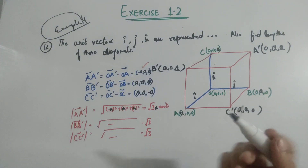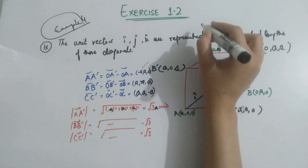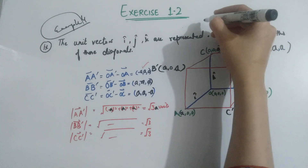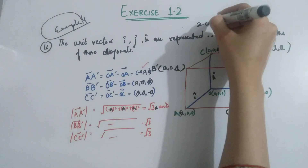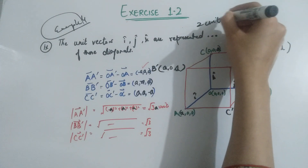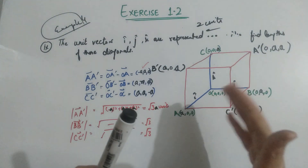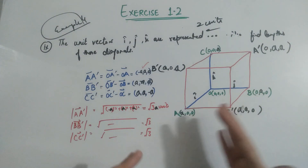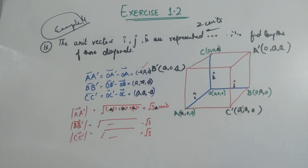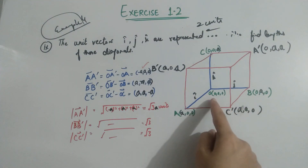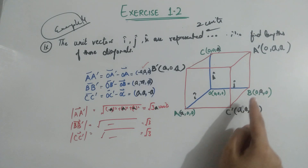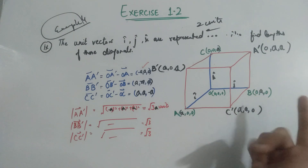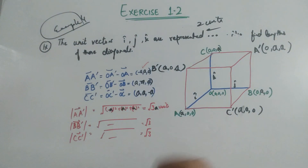When the length of each side is two units, you increase every side accordingly. So vertex A becomes (2, 0, 0), B becomes (0, 2, 0), and likewise for all other vertices of this cube.